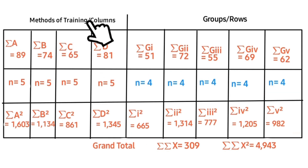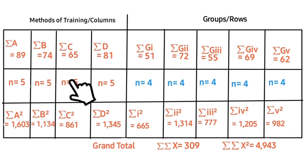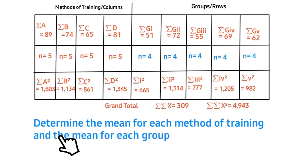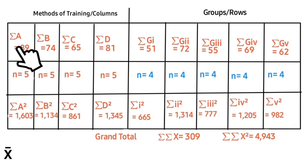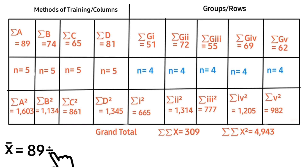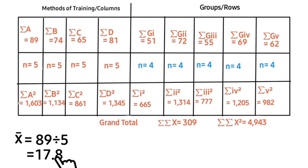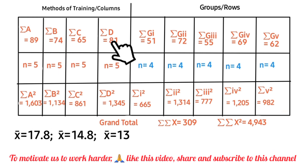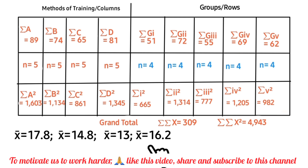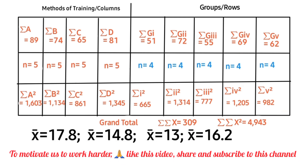Let's rearrange all this data. These are the values from the calculations for the columns (methods of training) and the values for the groups (rows). Determine the mean for each method of training and the mean for each group, represented with the mean symbol. For the first method of training, the mean is that value divided by n, giving 17.8. The mean for the second method is its sum divided by 5. For the last method we have 81 divided by 5, giving 16.2.